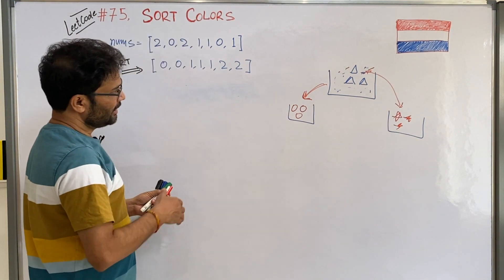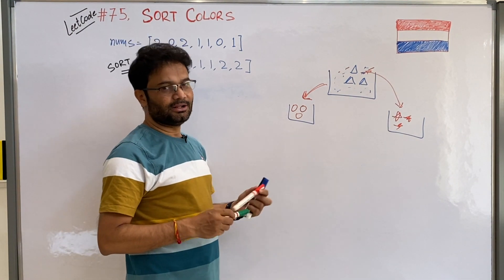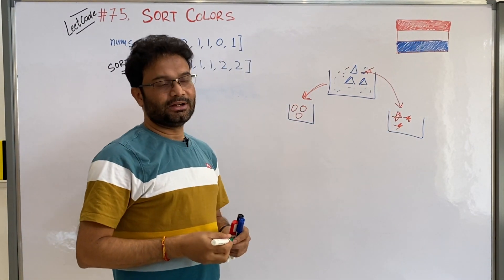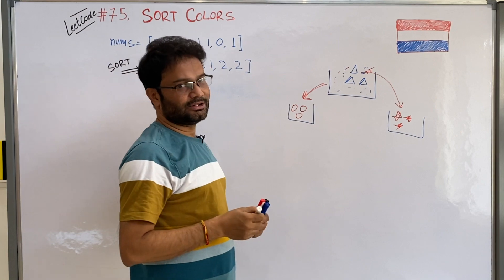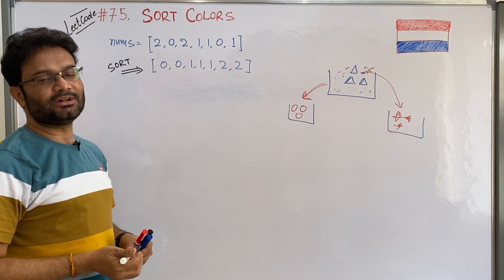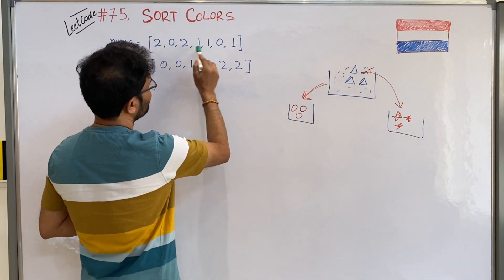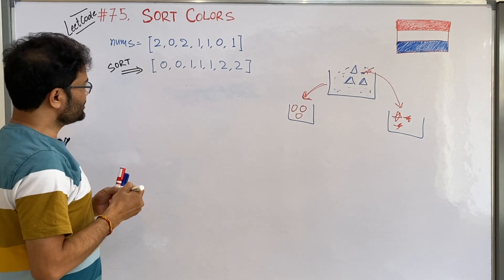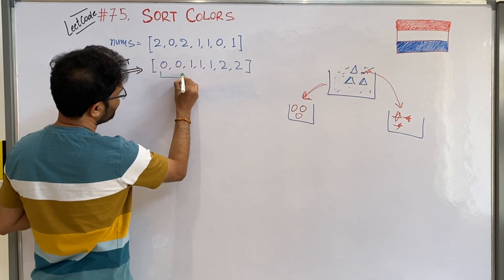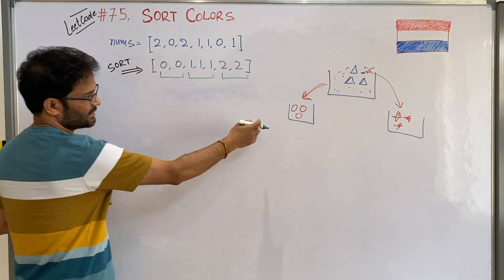This algorithm is called the Dutch National Flag. If you see, this is actually the flag of the Dutch and they have 3 colors. The same thing — you have 3 colors in the national flag, that is why this algorithm is known as the Dutch National Flag algorithm, and equivalently we have 3 different items. When you sorted the array, you actually segregated all items into 3 different buckets — the same thing.